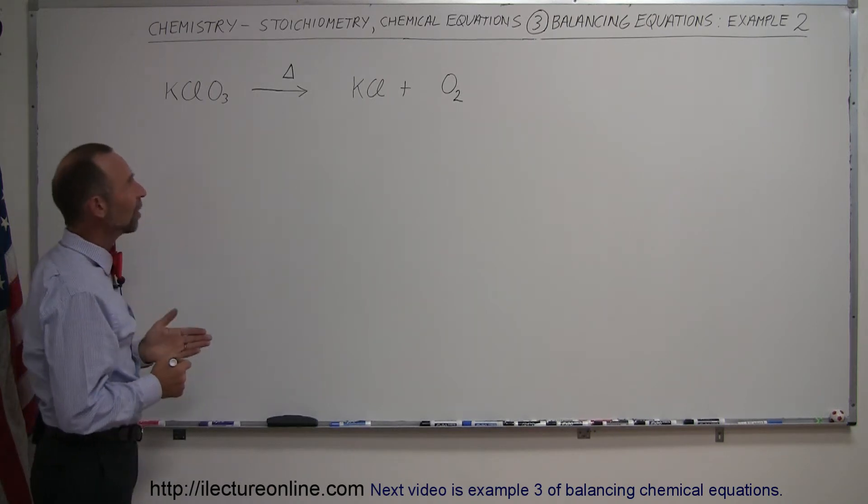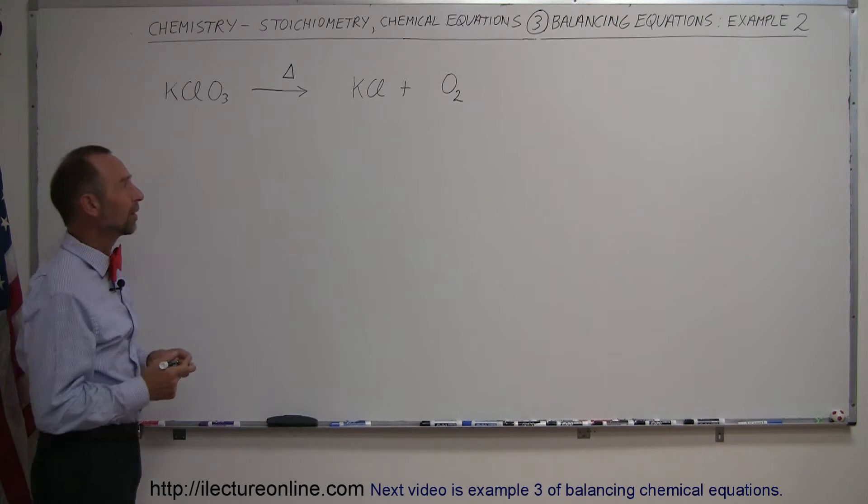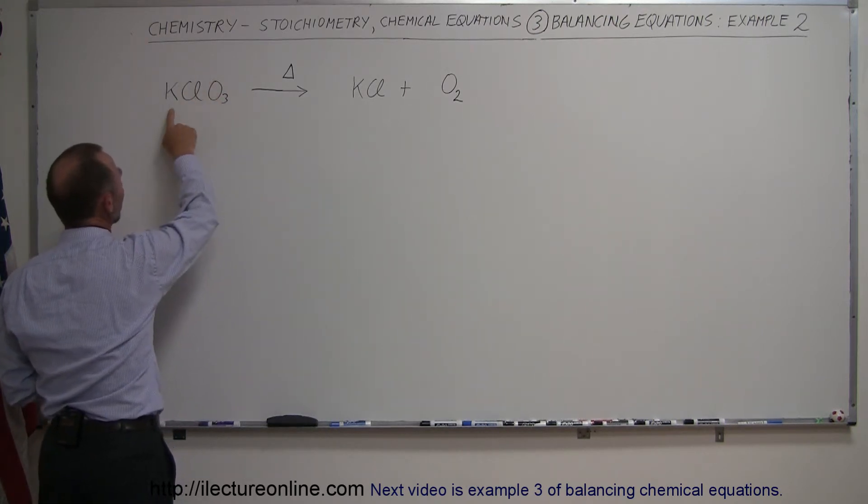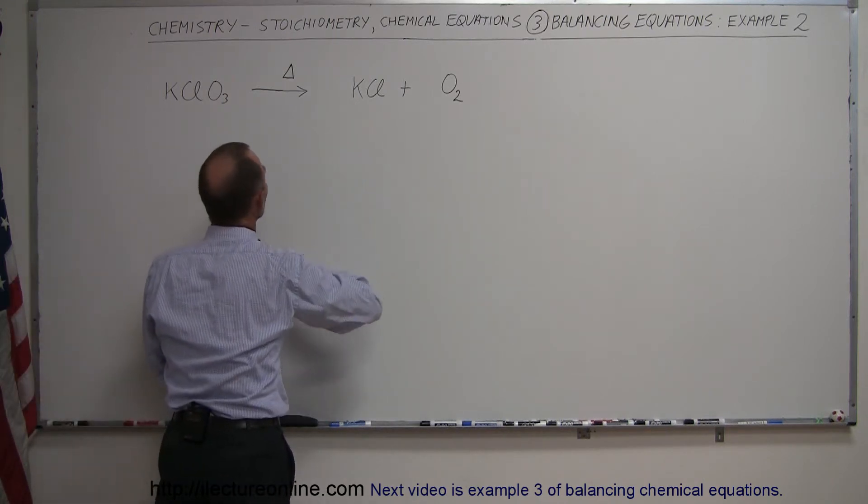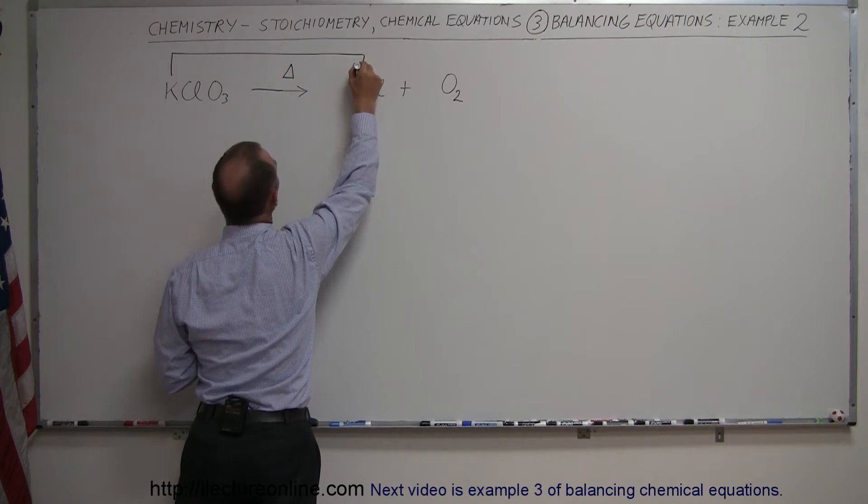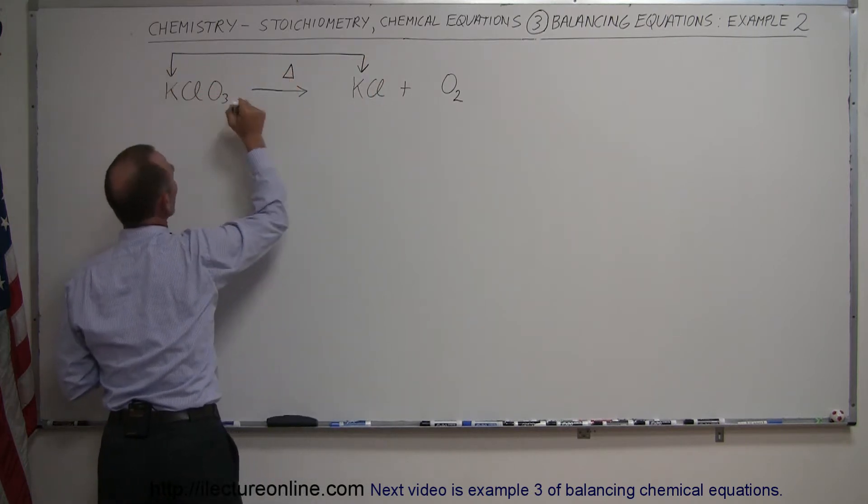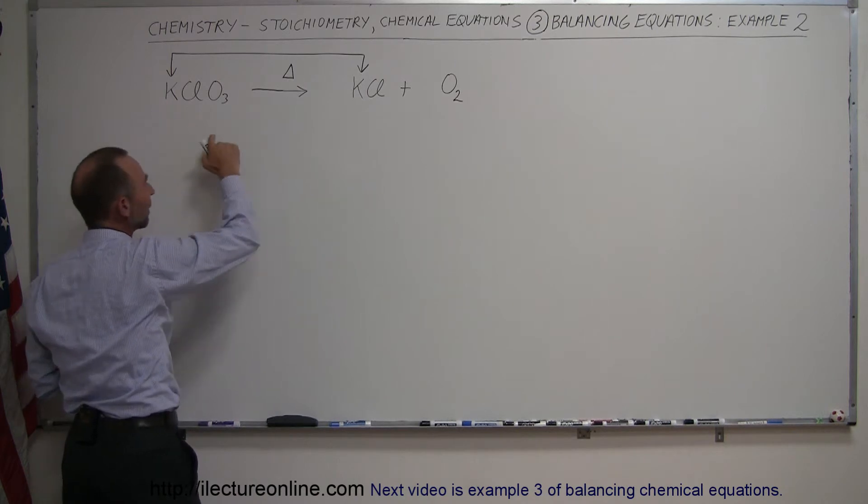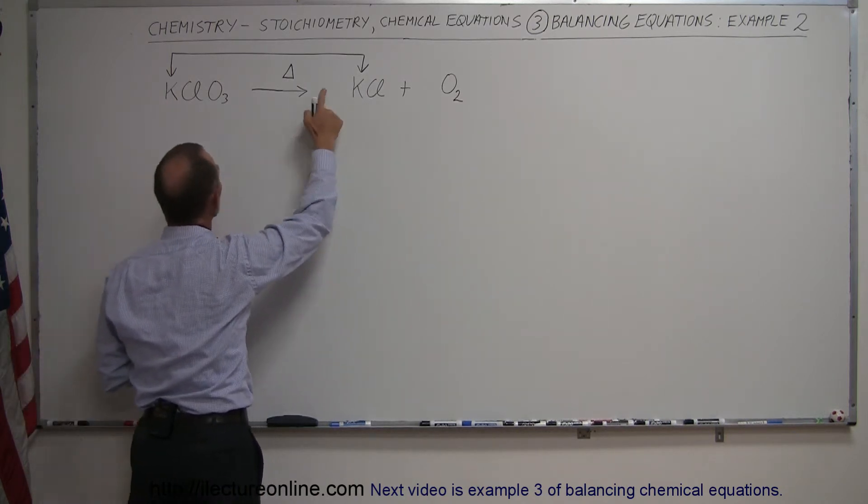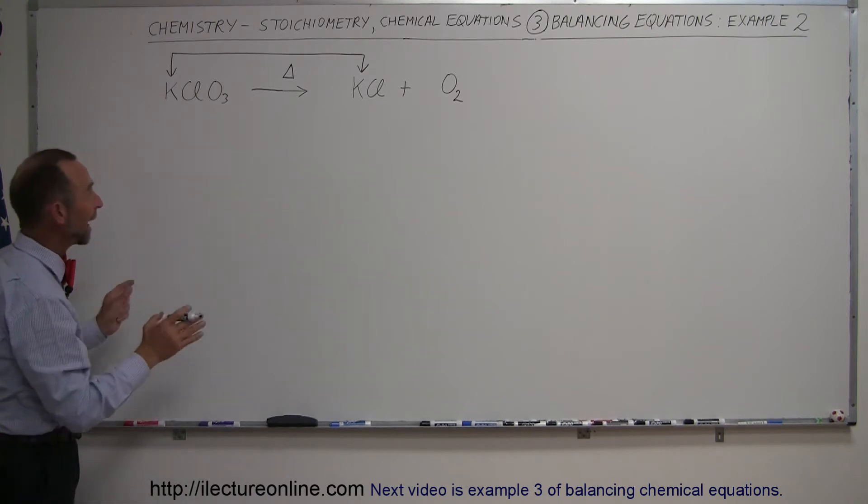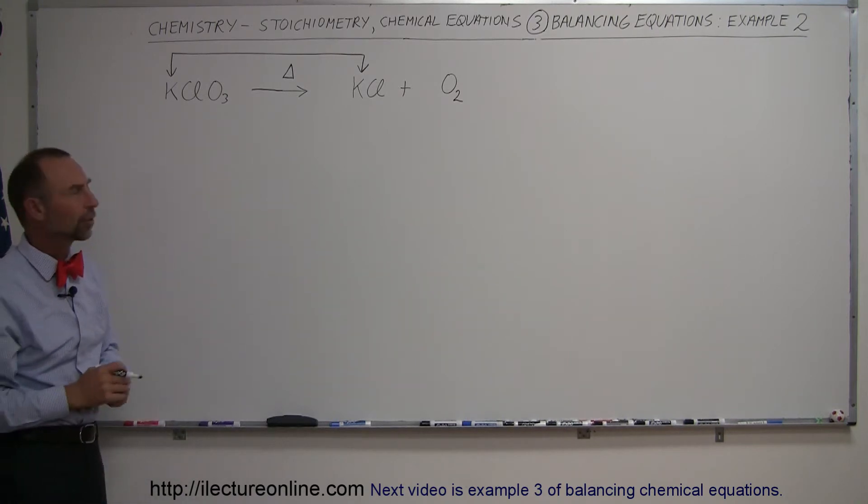But this equation is not balanced, so how do we balance that? Notice that over here we have potassium by itself in one compound right here and then we have potassium over there, which means that these two molecules will have to have the same quantity. So if this is one mole of potassium chloride, then we have to have one mole of potassium chlorate. If this is two moles of potassium chloride, we'll need two moles of potassium chlorate just to make sure that the potassium is balanced on both sides of the equation.